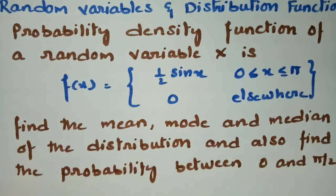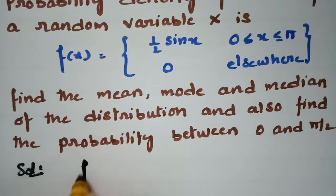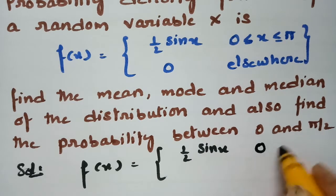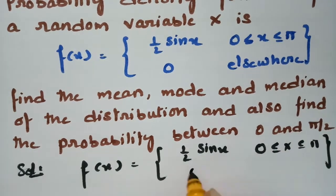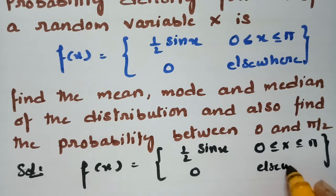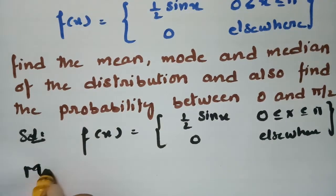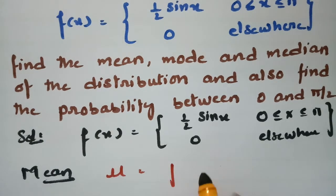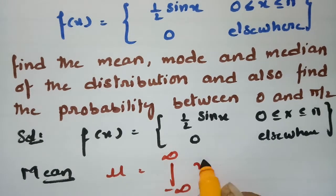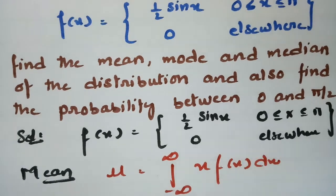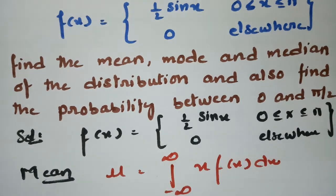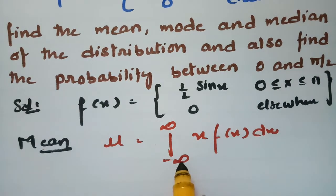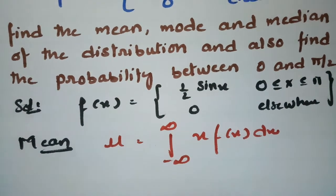We have to find the mean, mode, and median of the distribution, and also find the probability between 0 and π/2. First we will find the mean. The formula for mean is μ = integral from minus infinity to plus infinity of x·f(x) dx. We have limits 0 to π.